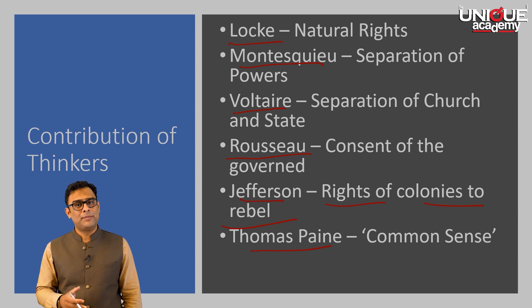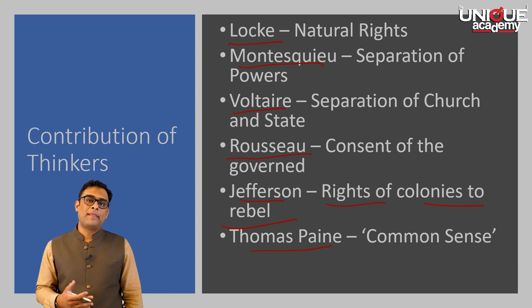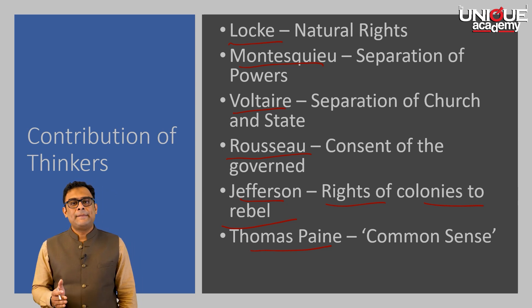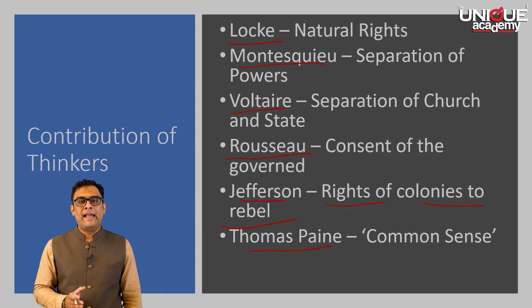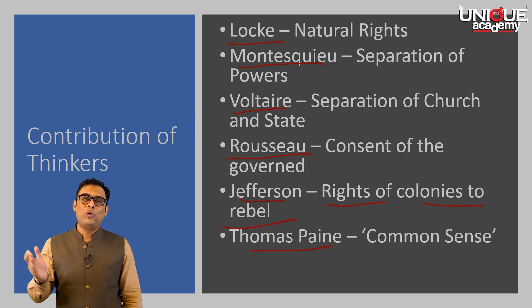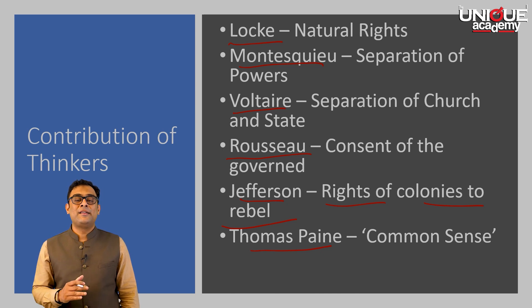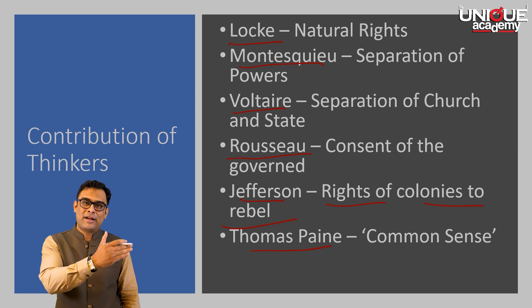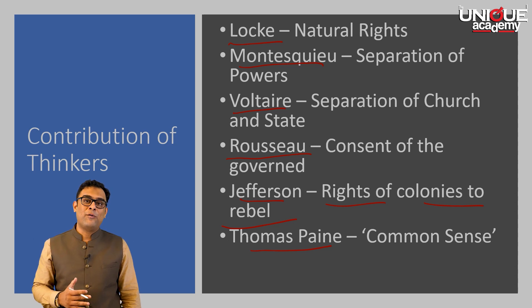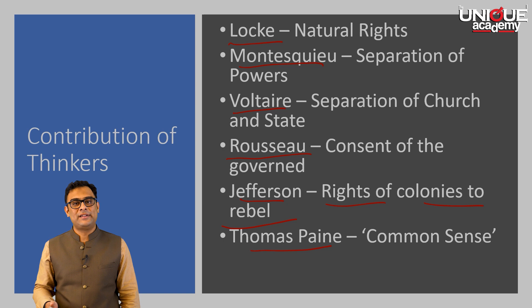Thomas Paine is another intellectual who enabled the people of America to take the final decision of severing ties with Britain. A British citizen himself, Thomas Paine travelled to America and just before the war wrote a famous essay called Common Sense. In this essay, he made a very persuasive case about how illogical it was for a small country across the Atlantic to rule all 13 massive colonies. His pertinent arguments convinced many fence-sitters who were in a dilemma about whether to cut off ties with Britain.